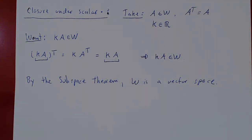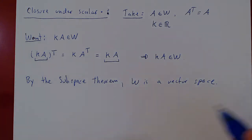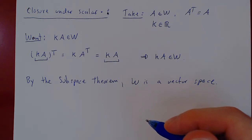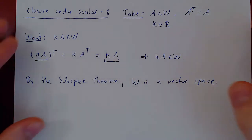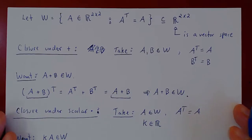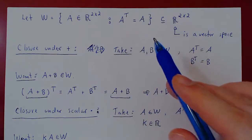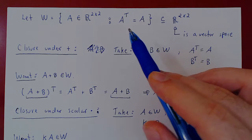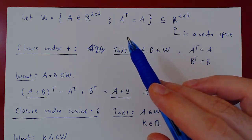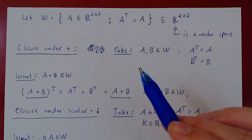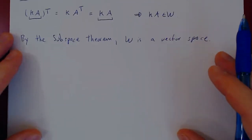Now that we have proved that the set of 2 by 2 symmetric matrices is a vector space — namely a subspace of R2×2, the set of all 2 by 2 matrices — we are going to find a basis and the dimension of our space. Whenever you look for a basis, you have to find the elements of your space explicitly.